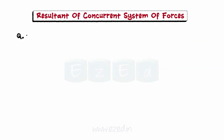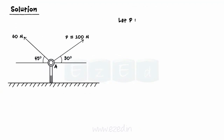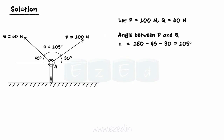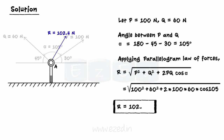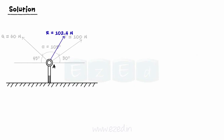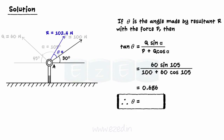Let's consider the given problem. Two forces of 100N and 60N act on an eye-bolt at A as shown; determine the resultant of the two forces. Let P equal 100N and Q equal 60N. Firstly, we find the angle between the two forces P and Q: alpha, which is 105 degrees. Now, by applying parallelogram law of forces, we find the resultant R equal to 102.4N. Now let's find the inclination of the resultant. Let theta be the angle it makes with force P. We use the relation tan theta equal to Q sine alpha upon P plus Q cos alpha. On calculating, we find theta equal to 34.45 degrees with the 100N force.